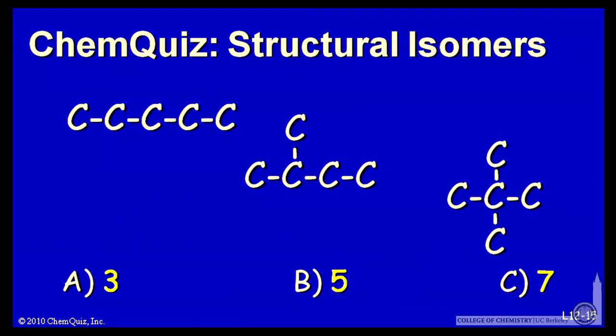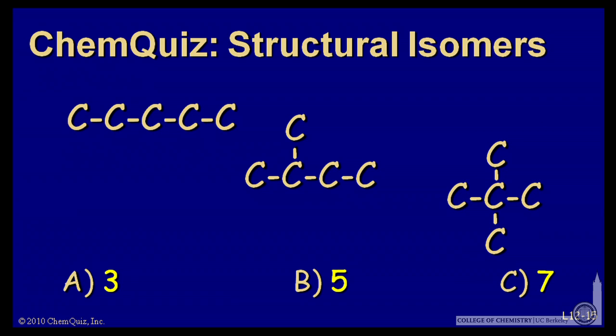There's one more branch I can make in the chain. I can have a central carbon and four carbons attached to it. So this is a third way to arrange the carbon chain. There's no way to arrange the hydrogens among these that will make different isomers of these three.